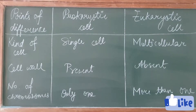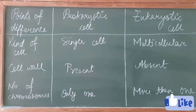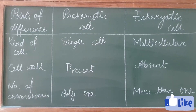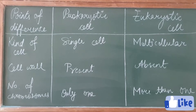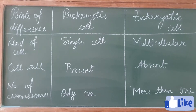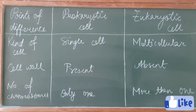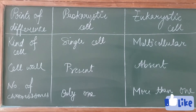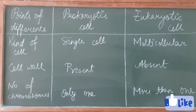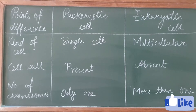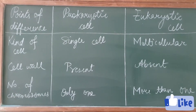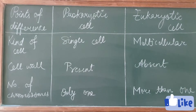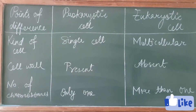Today's topic is the difference between prokaryotic cell and eukaryotic cell. I will explain by points of difference. The first point of difference is kind of cell. In prokaryotic cell, it is single cell, and in eukaryotic cell, it is multicellular.